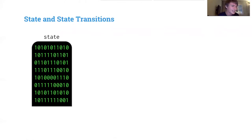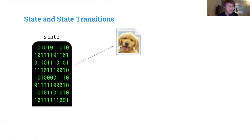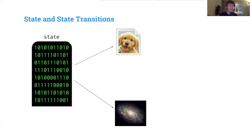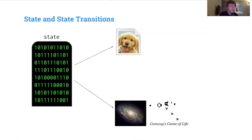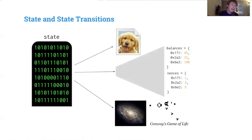Everything is information. Our state is a bunch of ones and zeros — ones and zeros are the fundamental thing, all you need for information. These ones and zeros can represent a picture of a doge, a snapshot of the universe, even our physical lives in information. They can represent a snapshot of Conway's Game of Life, which is itself maybe a universe with living beings in some simulations.